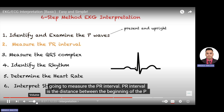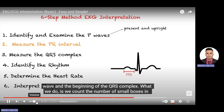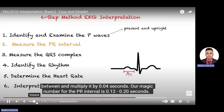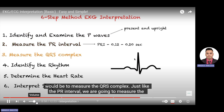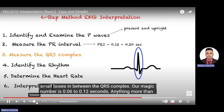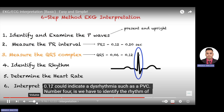Step two: measure the PR interval, which is the distance from the beginning of the P wave to the beginning of the QRS complex. Count the number of small boxes in between and multiply by 0.04 seconds. The normal range for the PR interval is 0.12 to 0.20 seconds — anything more than 0.20 seconds could indicate a dysrhythmia such as heart blocks. Step three: measure the QRS complex using the same method. The normal range is 0.06 to 0.12 seconds — anything more than 0.12 could indicate a dysrhythmia such as a PVC.